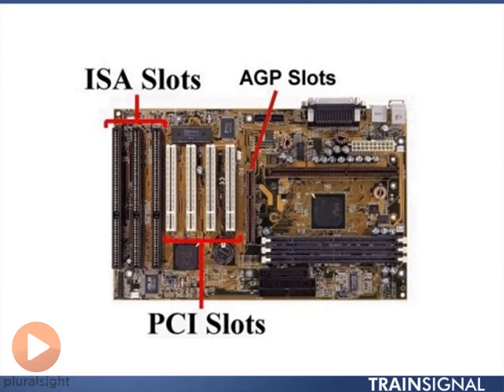PCI is the closest thing to what we still have in today's world, and there are many variations of PCI. What you're looking at here is an old board with the original 32-bit PCI slots. ISA was 16-bit, and they also had 32-bit versions. When we say 32-bit, that means we have a 32-lane highway, so more data can travel from point A to point B faster because it can all go side-by-side.